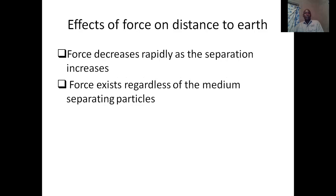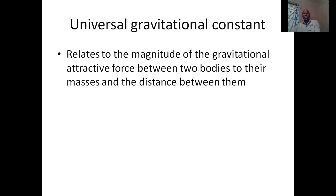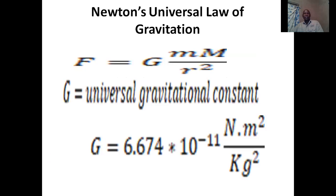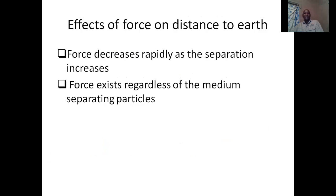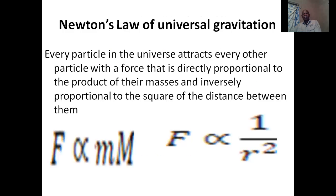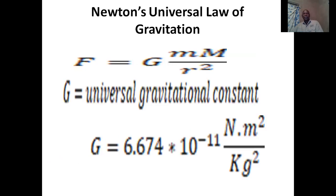The effects of force with distance — for instance, if we have a small mass above the Earth at a distance R from the Earth, the force decreases rapidly as the separation increases because of the square. The distance between the particles is squared, so as this value becomes greater, the force will decrease, and that's why we say it decreases rapidly because of the square.